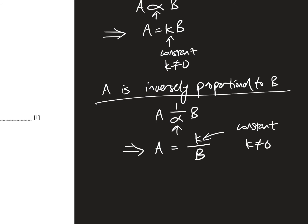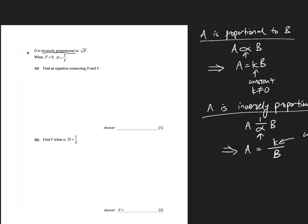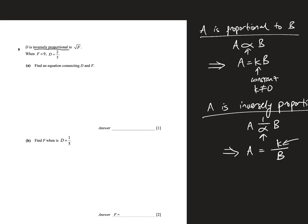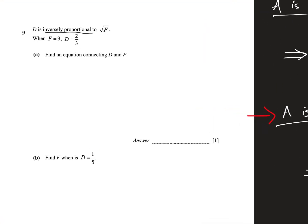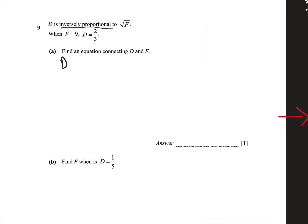Alright, so based on this, let's look here, it says D is inversely proportional to square root of F, so immediately we look at this one, inversely proportional, instead of A and B, now we have D and square root of F, so maybe let's just write that down, so we can say that D is inversely proportional to the square root of F, so it means D equals to K over the square root of F, where K is some constant.